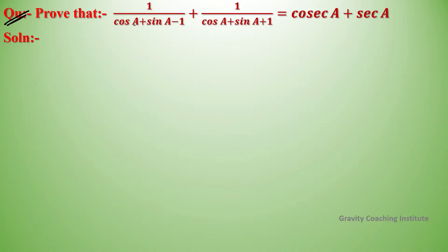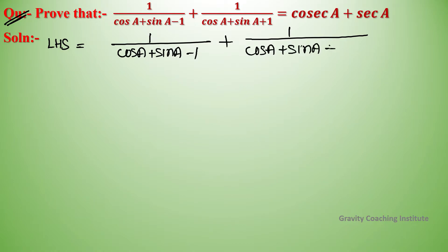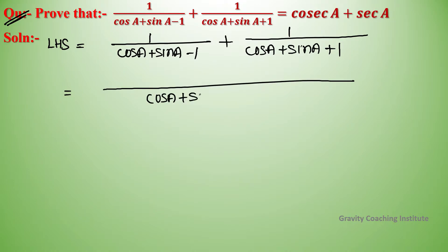Prove that 1 upon cos A plus sin A minus 1, plus 1 upon cos A plus sin A plus 1, equals cos A. Here LHS is equal to 1 upon cos A plus sin A minus 1, plus 1 upon cos A plus sin A plus 1.